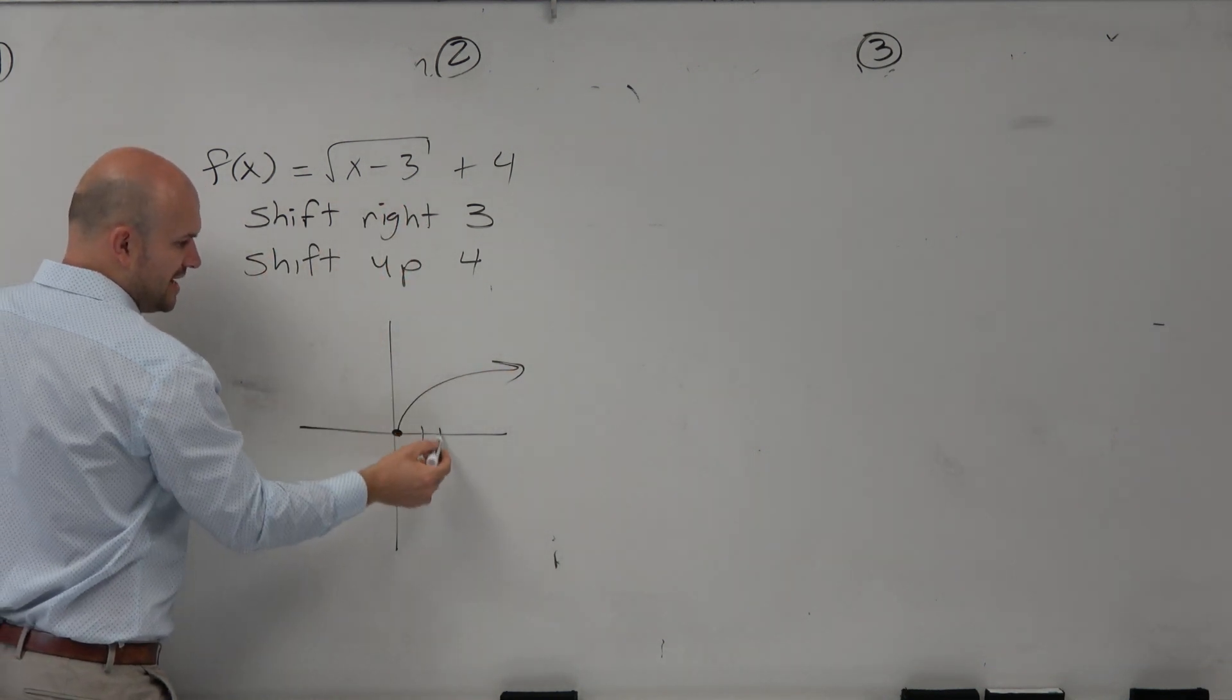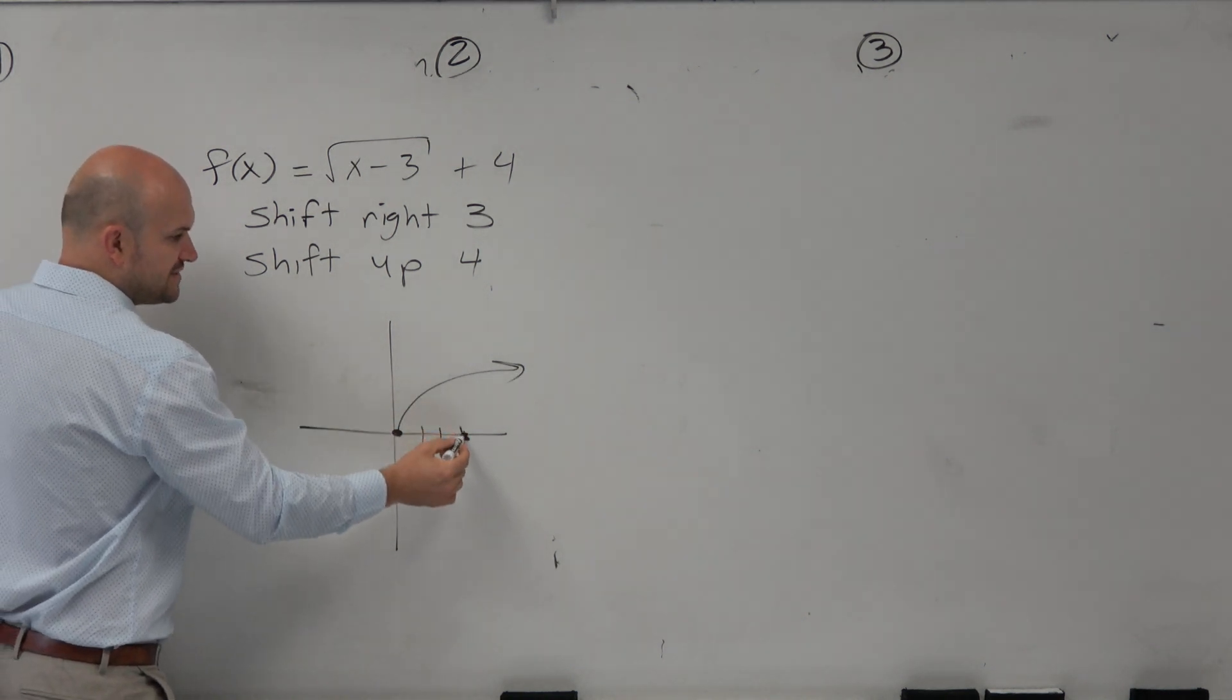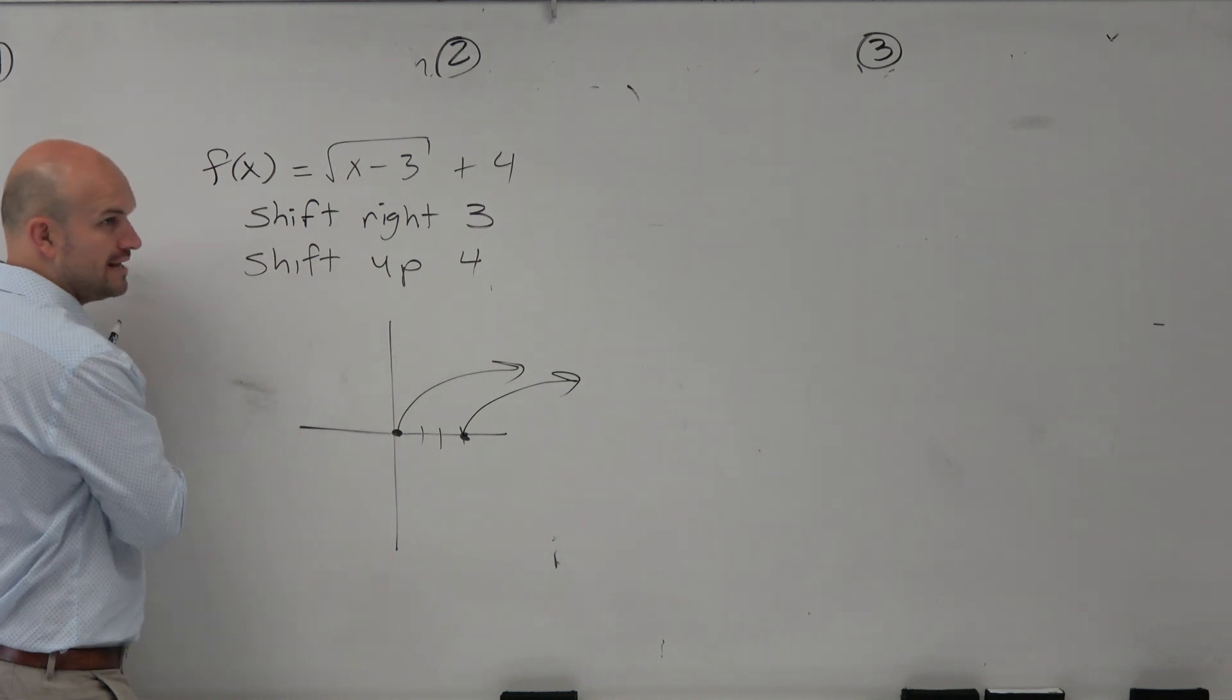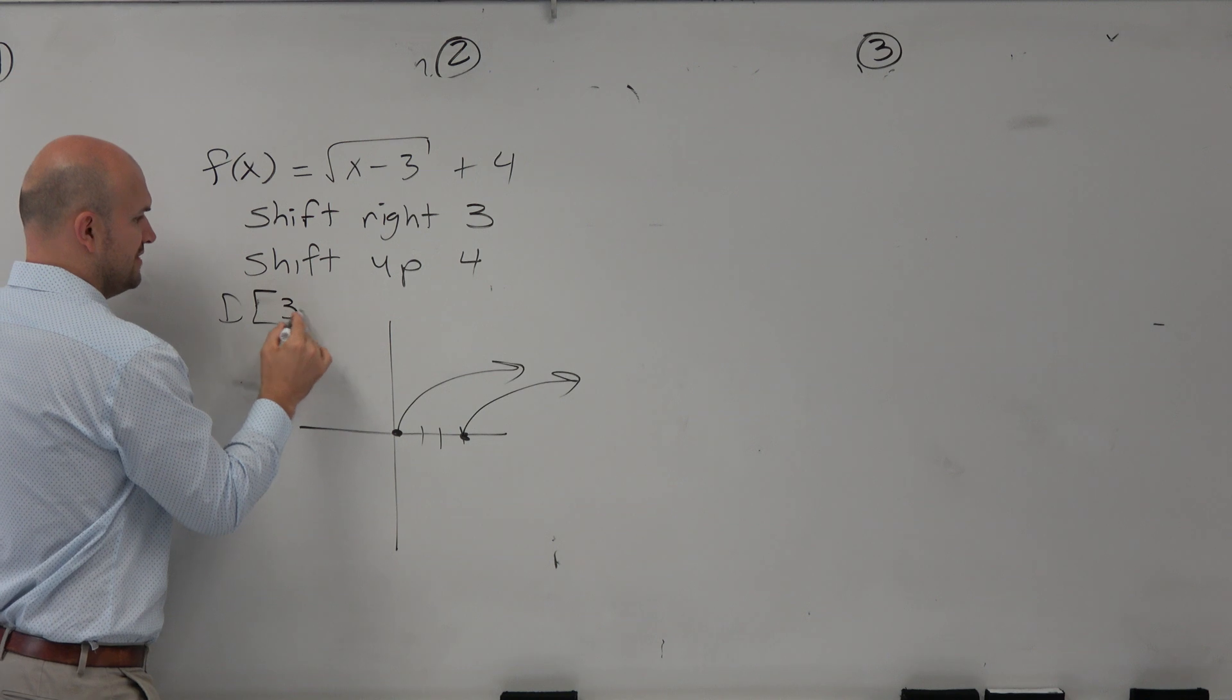If I shift the graph 3 units to the right, right now my domain is from 0 to infinity. When I shift this graph 3 units to the right, what is my new domain? 3 to infinity.